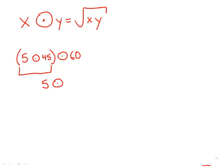So 5 circle dot 45 equals the square root of 5 times 45. Now, naively, you might think that the best possible thing you could do at this point, since you have 5 times 45, is multiply 5 times 45 and get some big honking number.